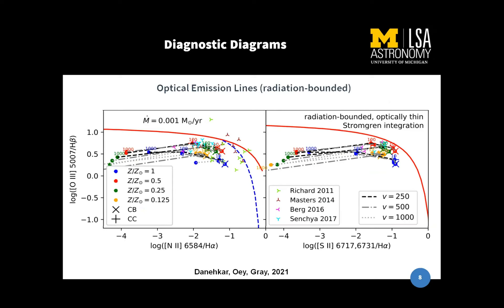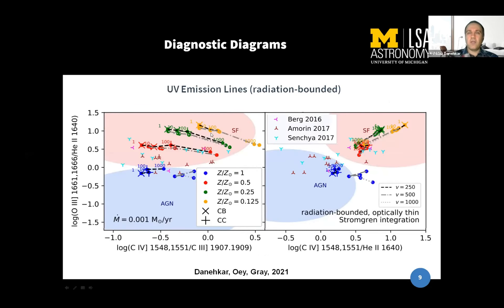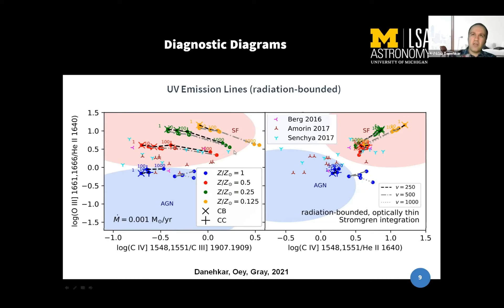It looks like from these diagrams you can't really diagnose metallicity — the metallicity lines all seem to cluster around each other. With change in metallicity, in optical it's difficult, but in UV you see the change in metallicity contributes to higher cooling. Oxygen III reduced — oxygen III over helium II — is reduced by increasing metallicity because increasing metallicity contributes to cooling effects. In optical it's a bit difficult, but in UV we see the change in metallicity reduces oxygen III.